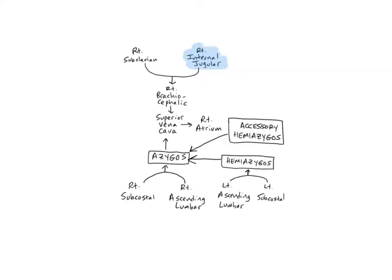The subclavian veins are continuations of the axillary veins at the armpit and unite with the internal jugular veins to form the brachiocephalic veins. The subclavians drain the skin, muscles, and bones of the arms, shoulders, neck, and superior thoracic wall.